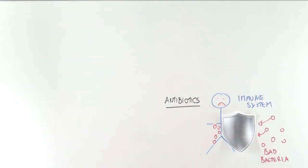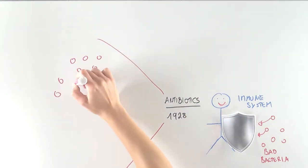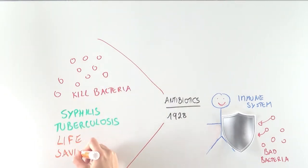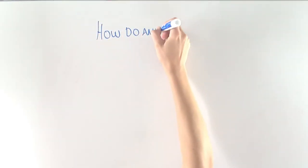In these cases, we rely on antibiotics. Antibiotics were first discovered in 1928. They work by specifically killing bacteria and have been life-saving. From syphilis to tuberculosis, antibiotics have prevented many epidemics and saved millions of lives. So how do antibiotics work?